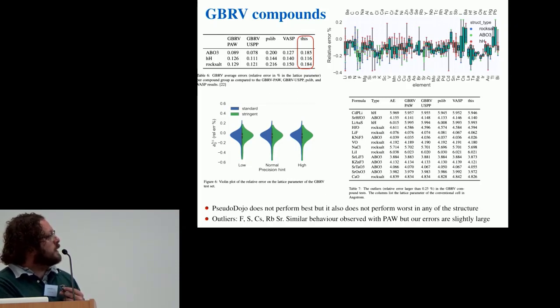Here I'm listing the outliers, and a similar behavior is also observed in the PW calculation, although our errors are slightly larger.